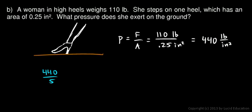We're comparing 440 pounds per square inch to 5 pounds per square inch. And if we just make a little ratio, 440 divided by 5 comes out to about 88. The pressure from the woman is 88 times as much pressure as from the elephant.